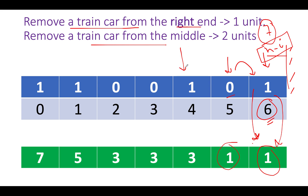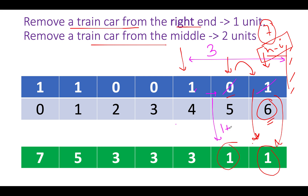Next we see a 1. Two possibilities: removal from the right costs n minus i = 7 minus 4 = 3. The middle removal uses the previous right value of 1, so 1+2 = 3. Minimum of 3 and 3 is 3, so we set 3 here.